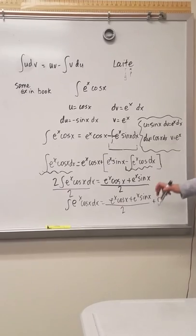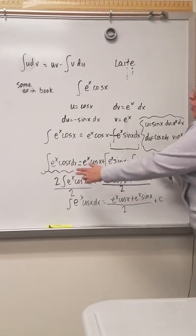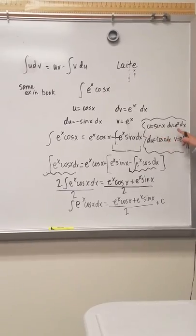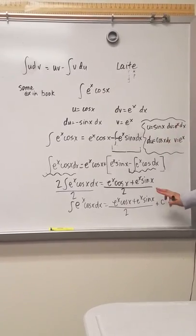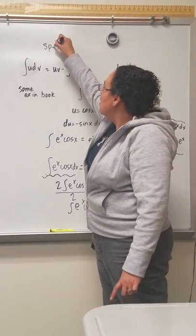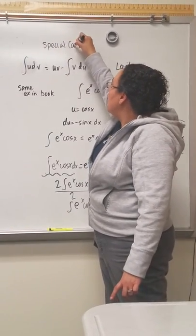And so the reason why we have to do this process and we have to have kind of an algebraic equation is because sine and cosine alternate and e to the x always alternate. So that's the process by which this is considered a special case number two.